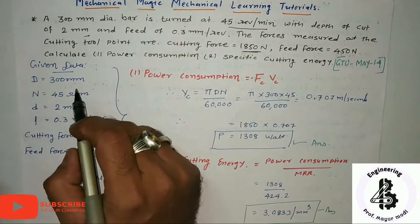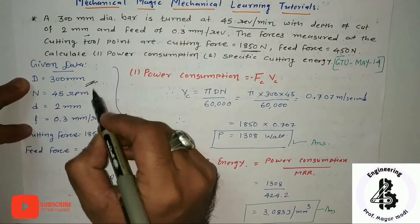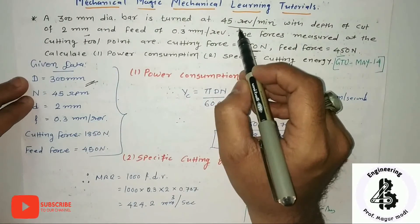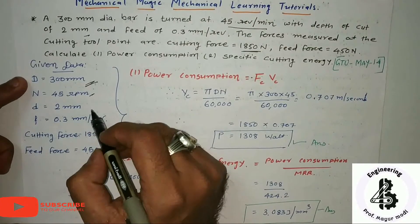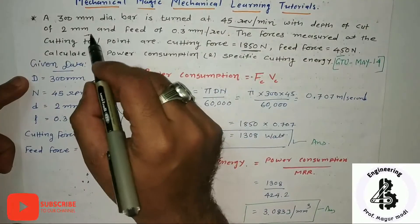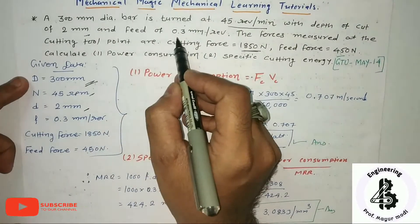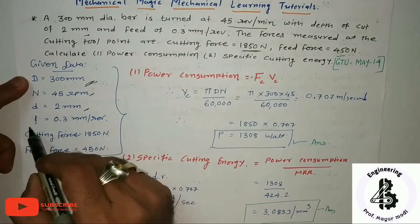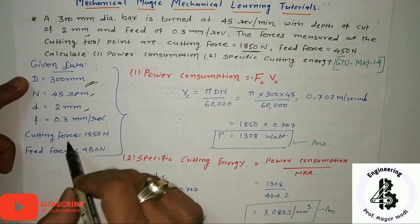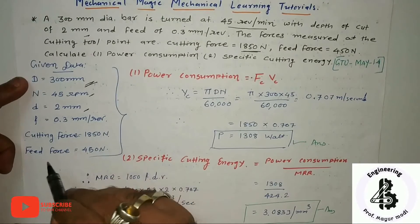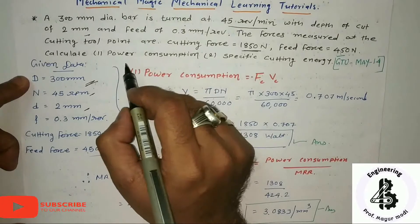From the given data: diameter D = 300 mm; speed N = 45 RPM; depth of cut d = 2 mm; feed F = 0.3 mm per revolution; cutting force Fc = 1850 Newton; and feed force = 450 Newton.